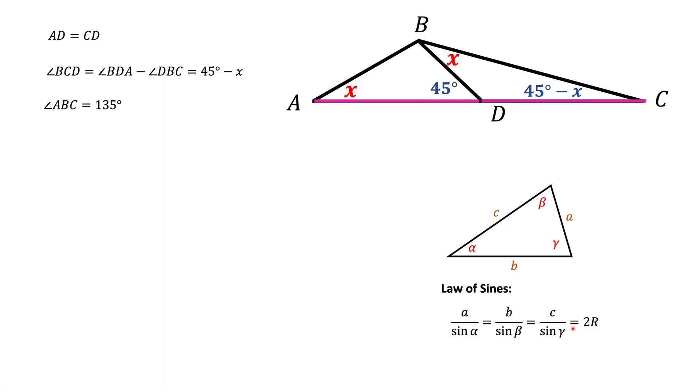Now there's an extra piece which is interesting that says that ratio is also equal to 2 times the radius of the circumscribed circle. That information is not really important for us now but it's a useful thing to know.